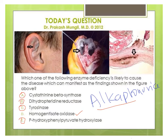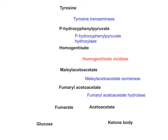Let me explain tyrosine catabolism first, then I'll go into alkaptonuria. This slide shows the tyrosine catabolic process. Tyrosine is converted into p-hydroxyphenylpyruvate by tyrosine transaminase enzyme. Then p-hydroxyphenylpyruvate is converted to homogentisate by p-hydroxyphenylpyruvate hydroxylase enzyme.